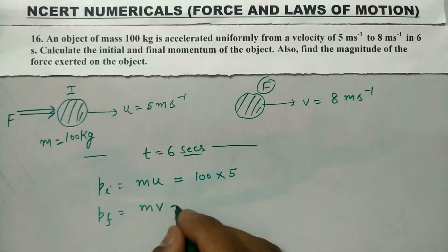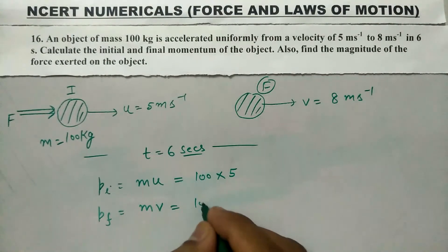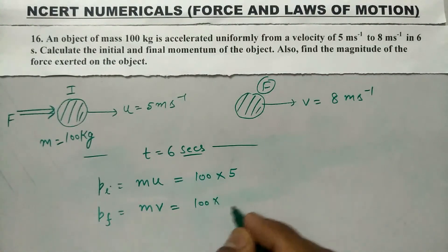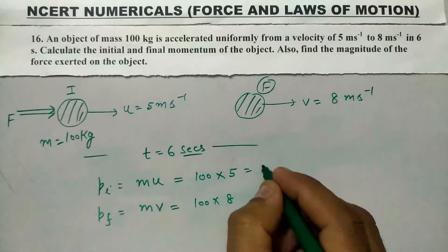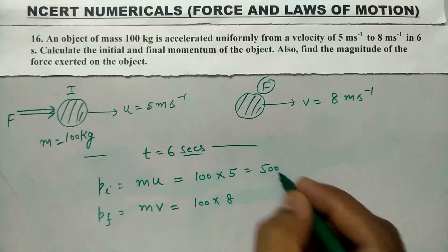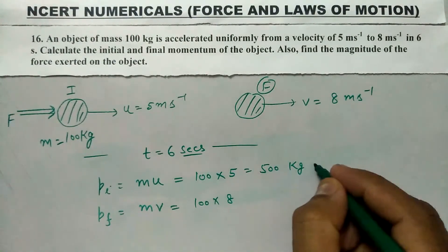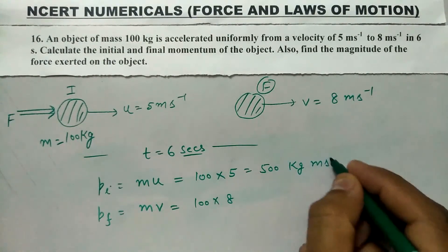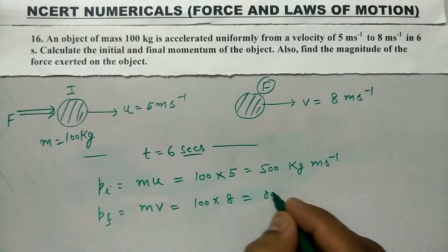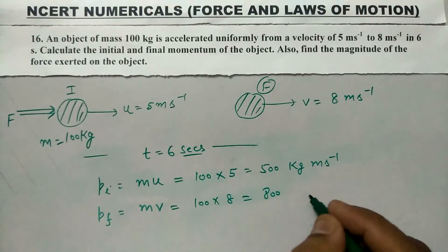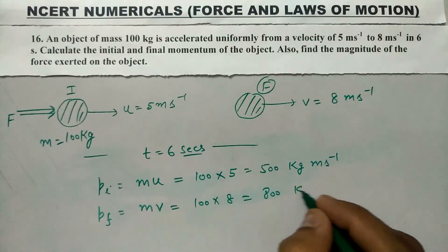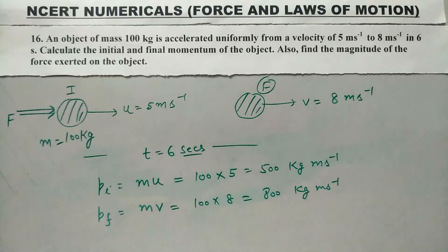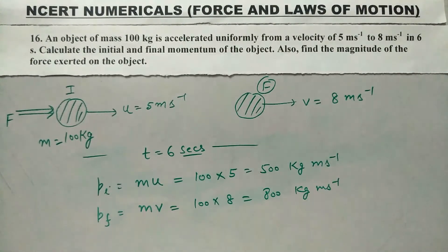यहाँ पर velocity कितनी है — 5 m/s। तो PI = 100 × 5 = 500 kg·m/s। और यहाँ पर velocity 8 m/s है, तो PF = 100 × 8 = 800 kg·m/s। (Initial velocity is 5 m/s, so PI = 500 kg·m/s. Final velocity is 8 m/s, so PF = 800 kg·m/s.)